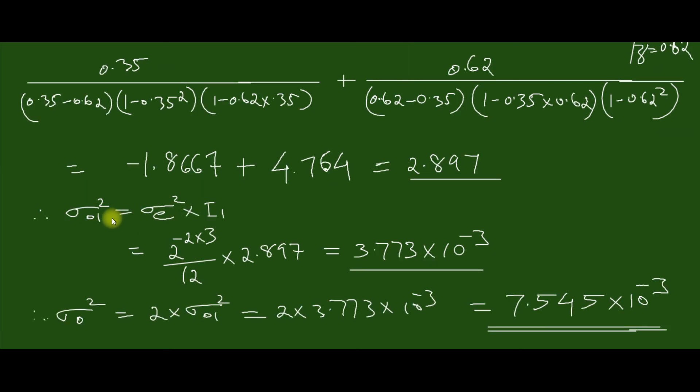Then sigma node 1 square equal to sigma e square into i1. Sigma e square is given by these values. Here b equal to 3.